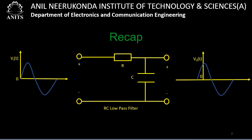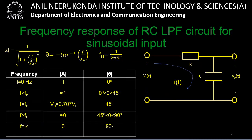We also looked at in the last class the frequency response of the RC low-pass filter circuit for sinusoidal input. We considered the circuit where the current flowing is i(t), the input is Vi(t), and the output Vo(t) is taken across the capacitor C. For deriving the transfer function we applied the voltage division rule, since R and C are in series and the same current flows through them. Applying the voltage division rule gives us the output voltage in terms of the input voltage.